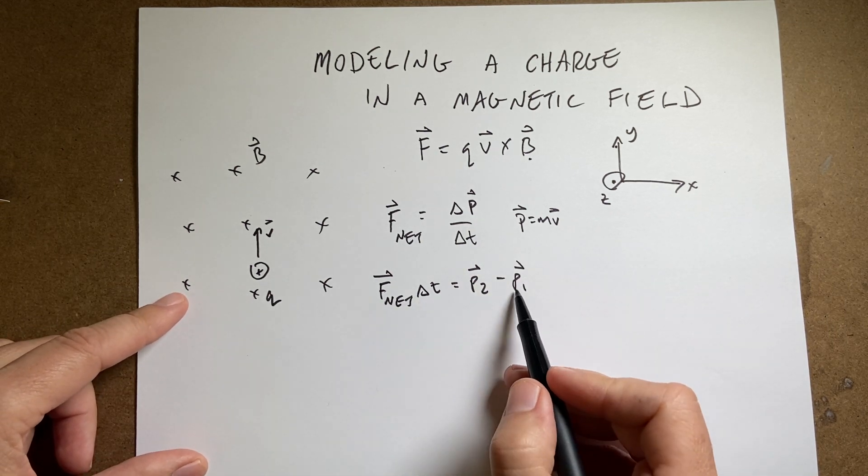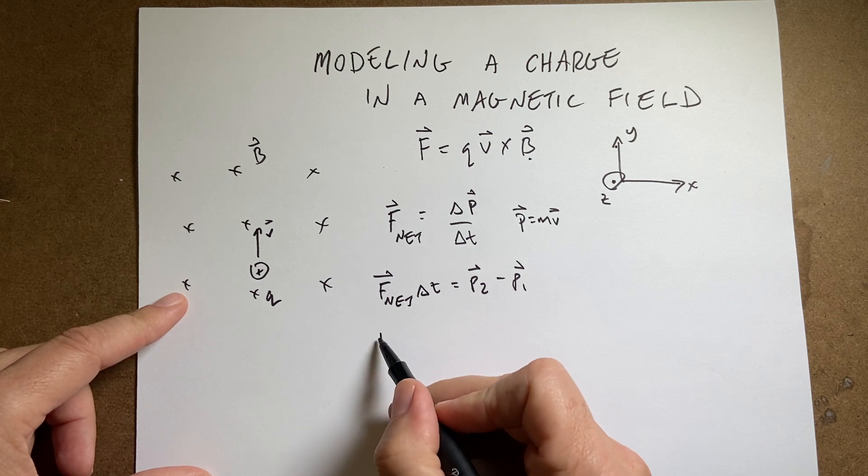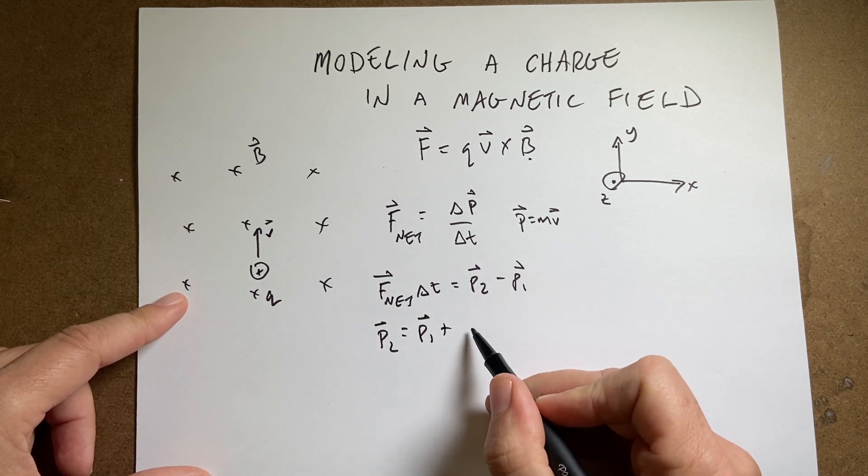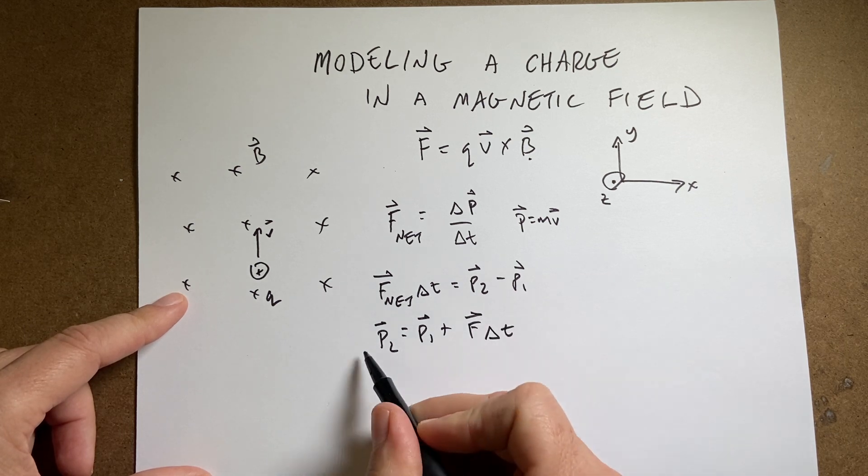I have to multiply both sides by delta T. I can add P1 to both sides. And I get this. P2 equals P1 plus F, we only have one force, delta T.